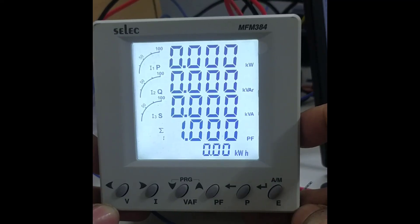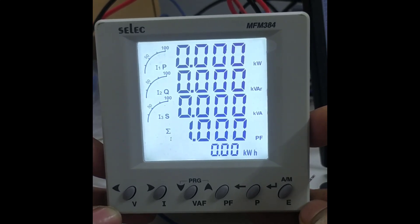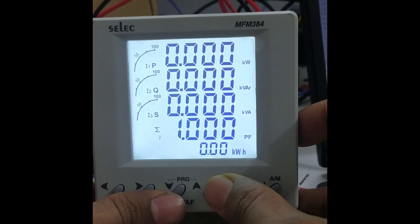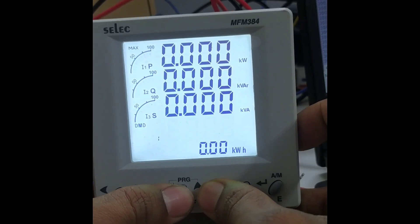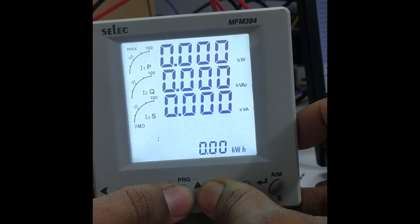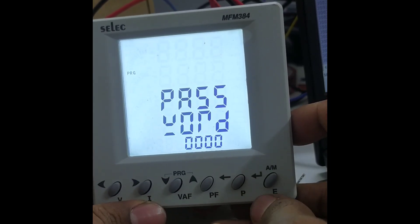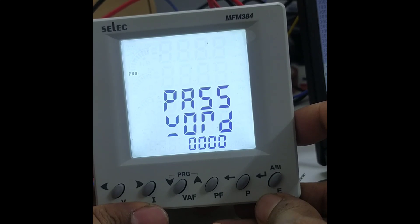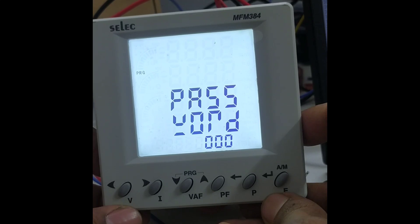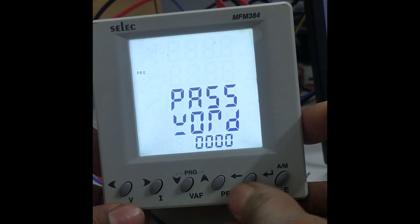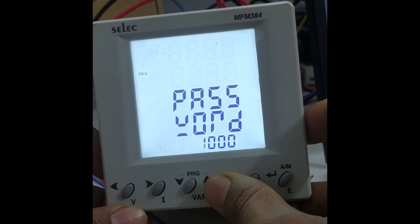In this video we are discussing how to check parameters of the Select MFM384. Press the upward and downward keys. Now the password screen appears. The default password for these meters is 1000. With the help of the left key, select the digit, and with the help of the upper key, select one and then press enter.